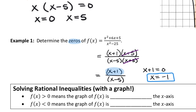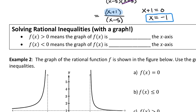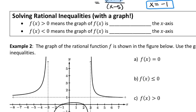Now that we've identified zeros, we can use that idea to solve inequalities. If f(x) > 0, you're looking for where the graph is above the x-axis. If f(x) < 0, you're looking for where the graph is below the x-axis — the same concept we used with polynomials.